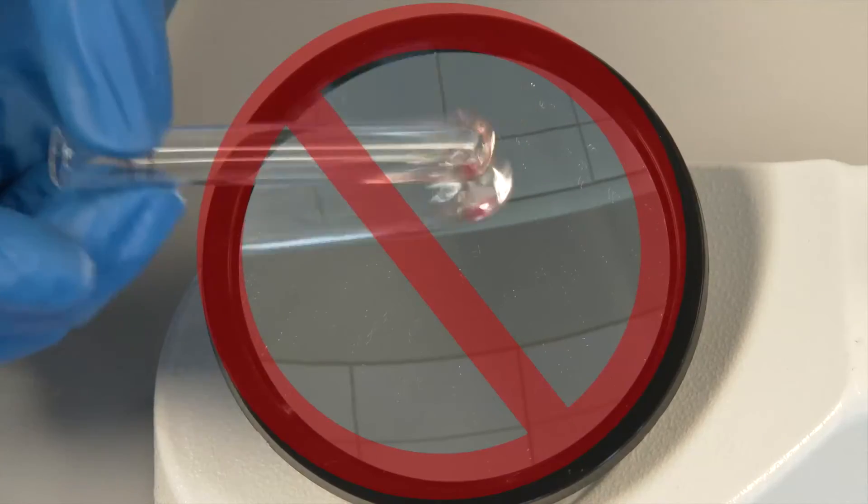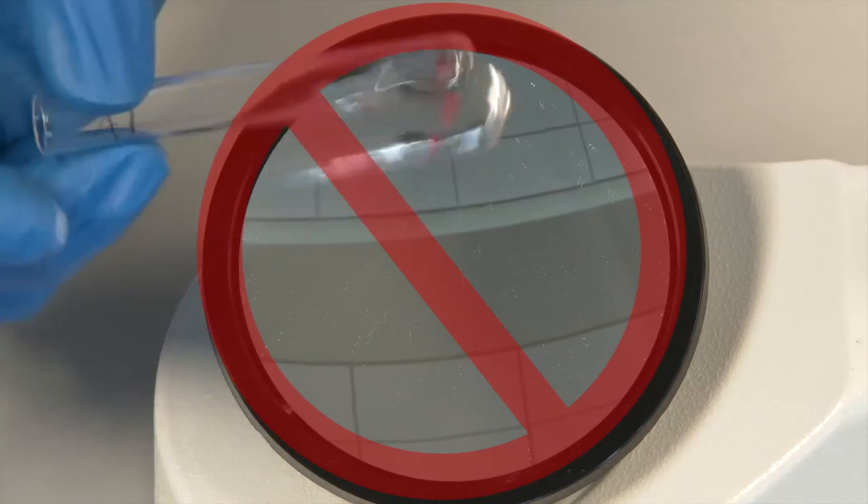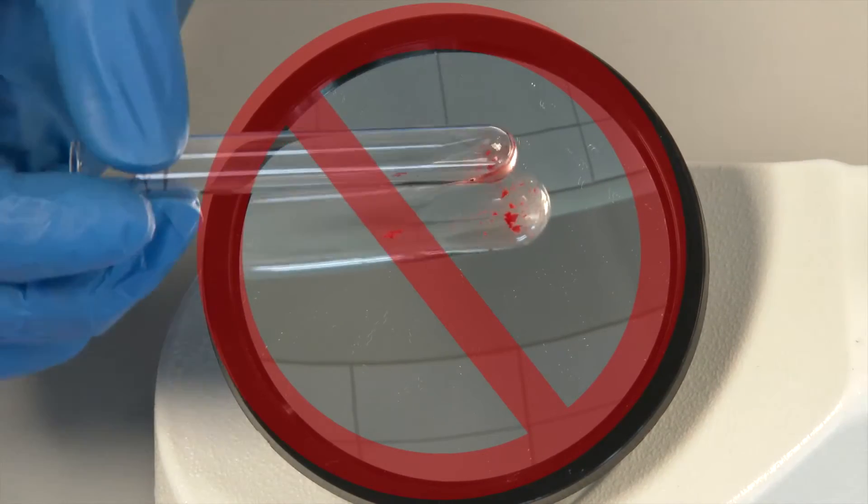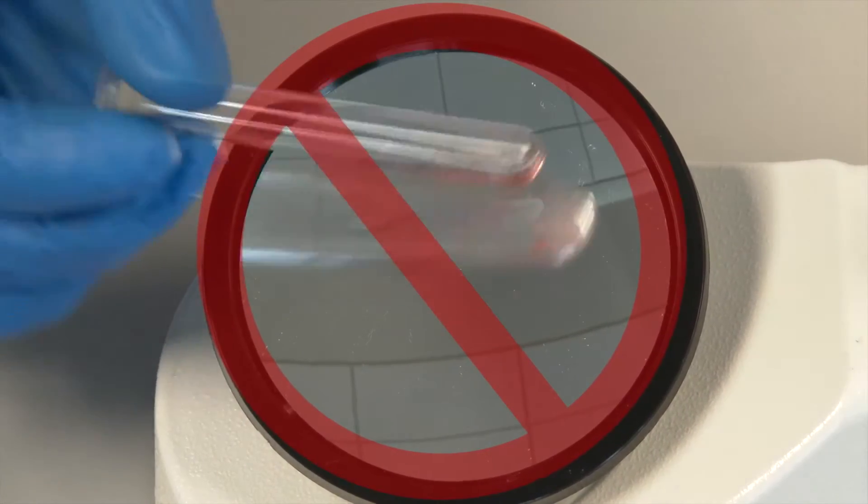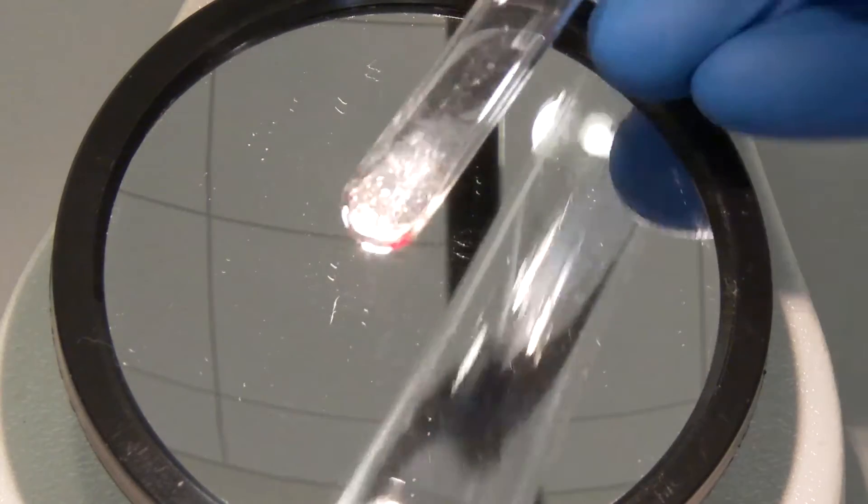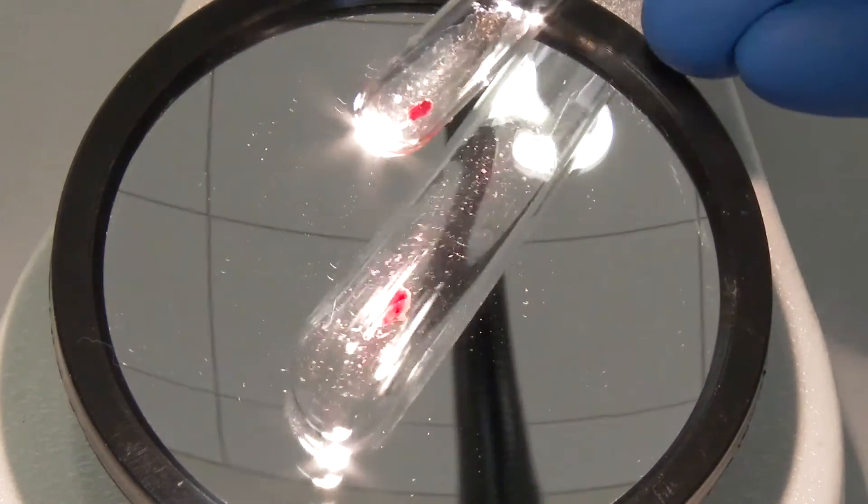Great care should be taken when shaking the test tubes because shaking too hard can cause reaction strengths to be less than expected or even cause a false negative result. Pay close attention to how the cell button comes off of the tube.